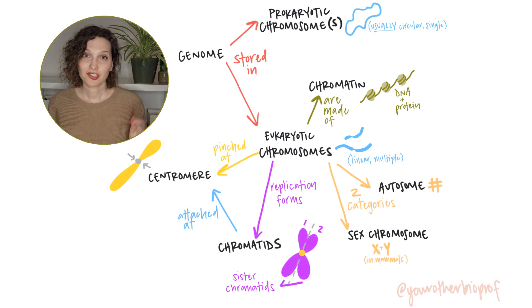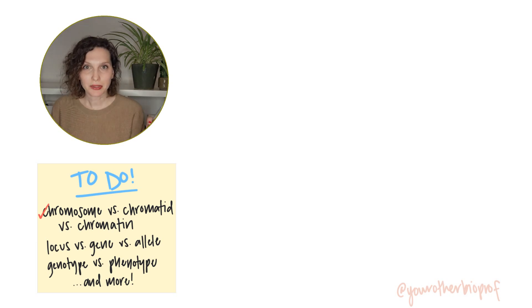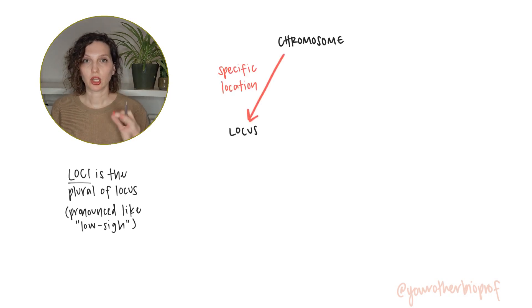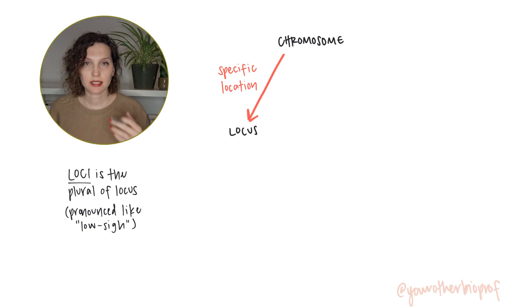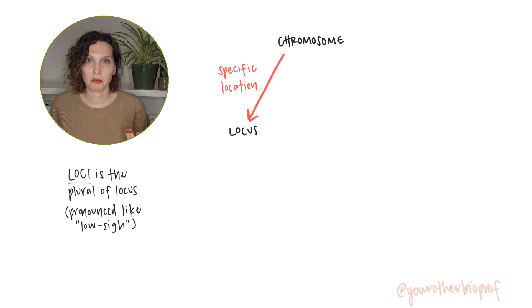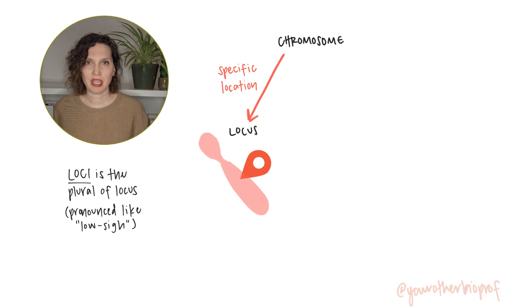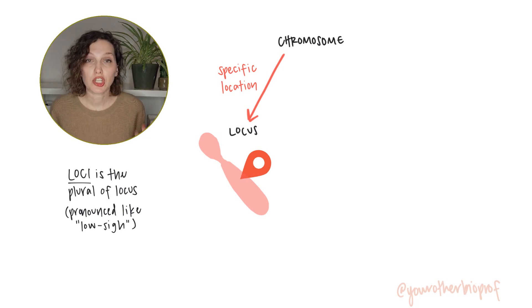For more on that, check out my video on replicated chromosomes. Now let's look a little bit closer at the DNA sequences on these chromosomes, starting with locus. When you see locus, think location — that's really what a locus is. It's the physical location on a chromosome of some DNA sequence of interest. You can think of it like dropping a pin on that chromosome. At a particular locus, we could find a gene.